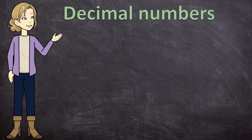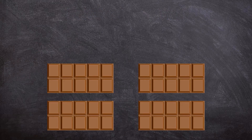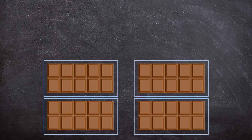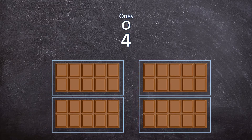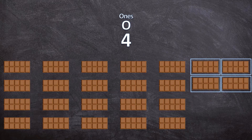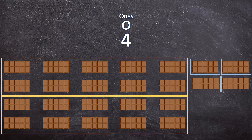Before we jump into decimal numbers let's just recap what we already know. Here we have one, two, three, four whole chocolates — so four ones. We also have two groups of ten chocolates, so two groups of tens. In total we have 24 chocolates: two groups of ten and then the four single chocolates.